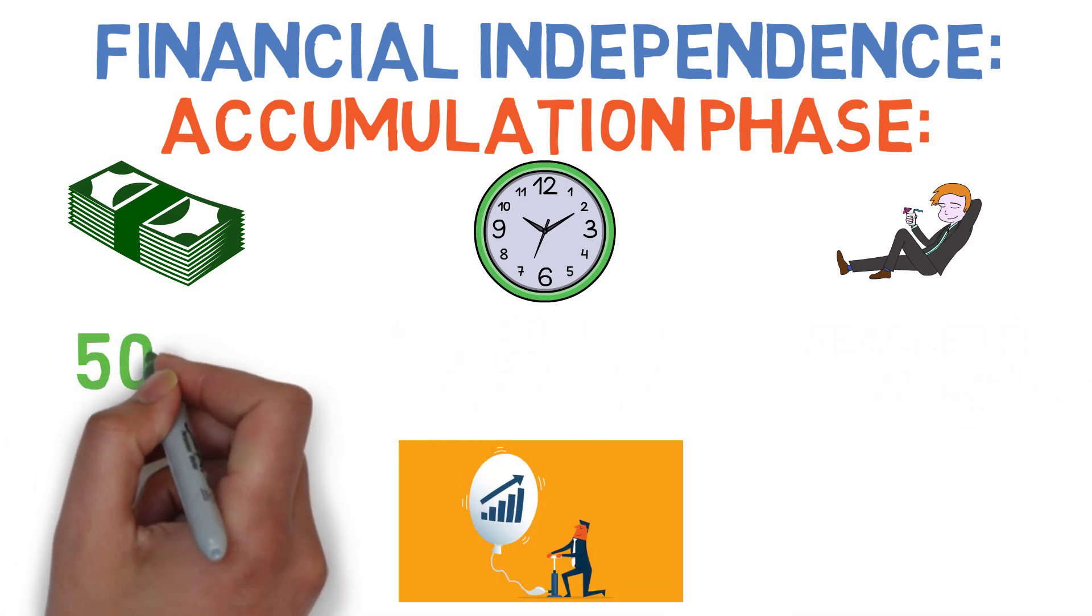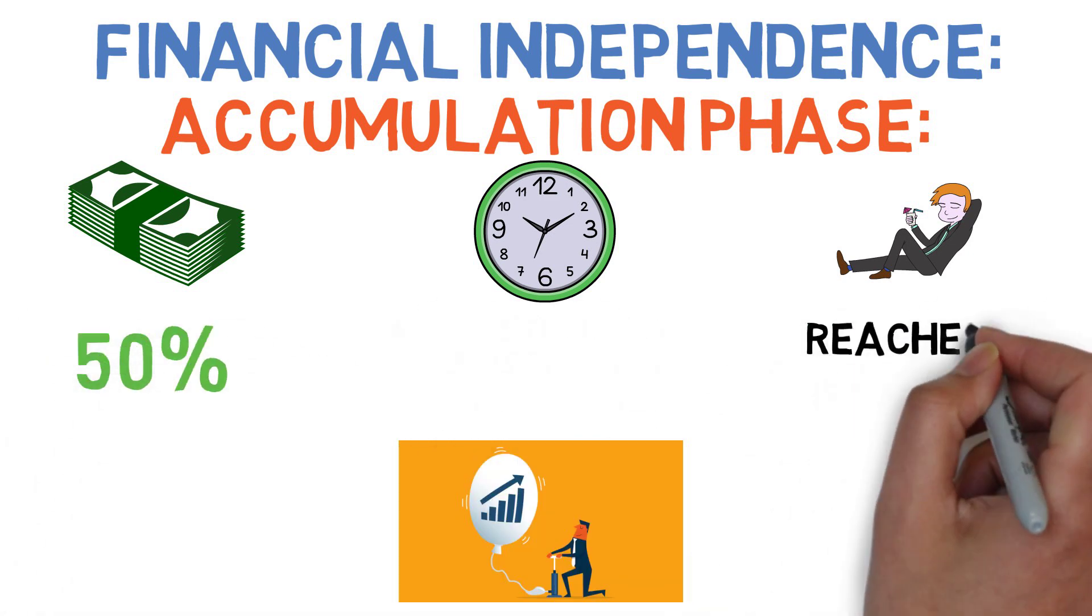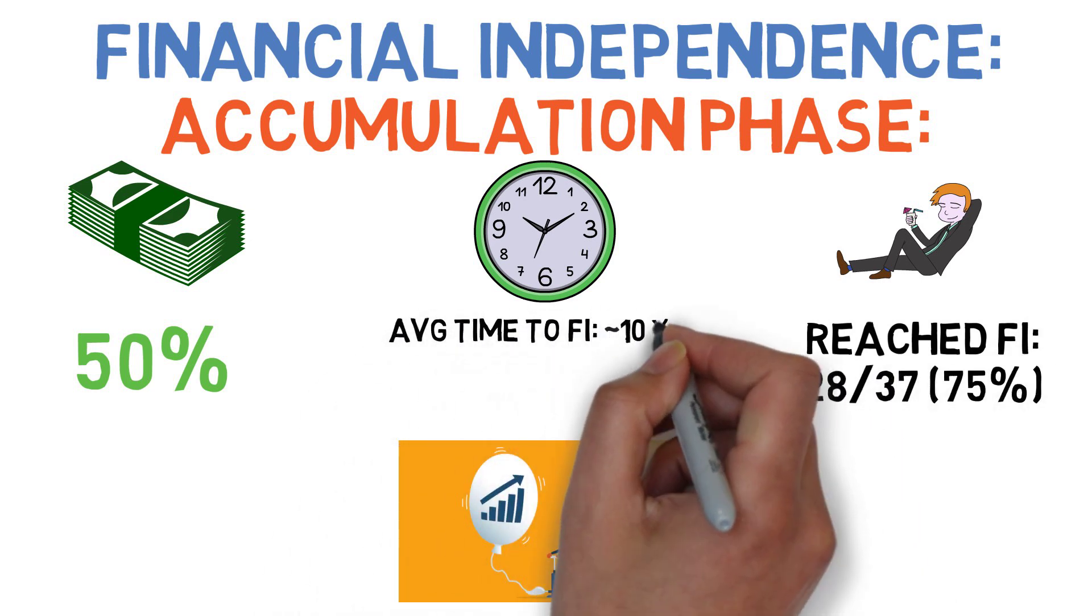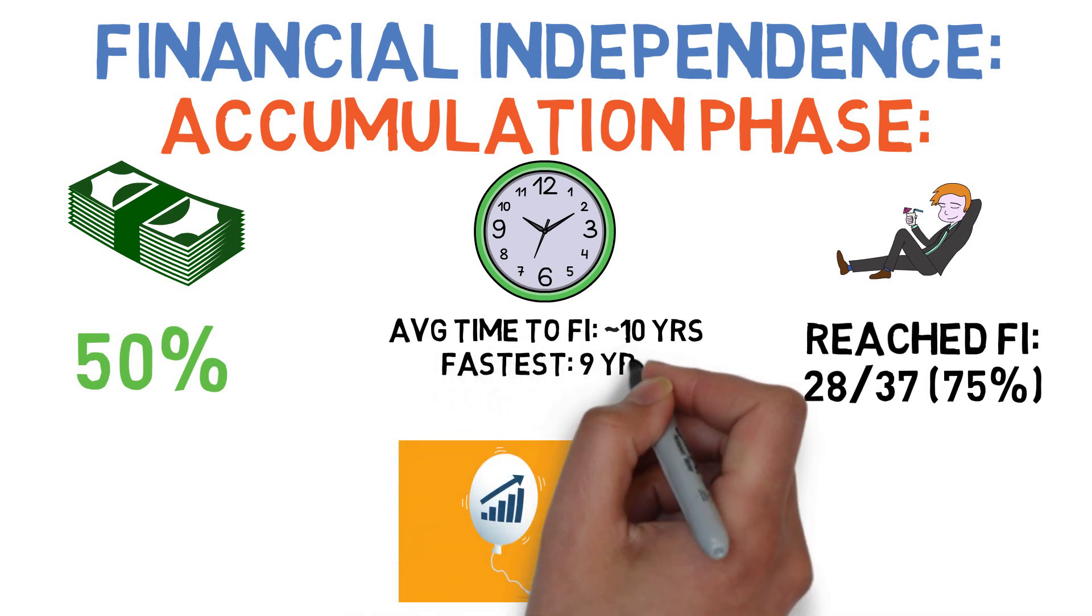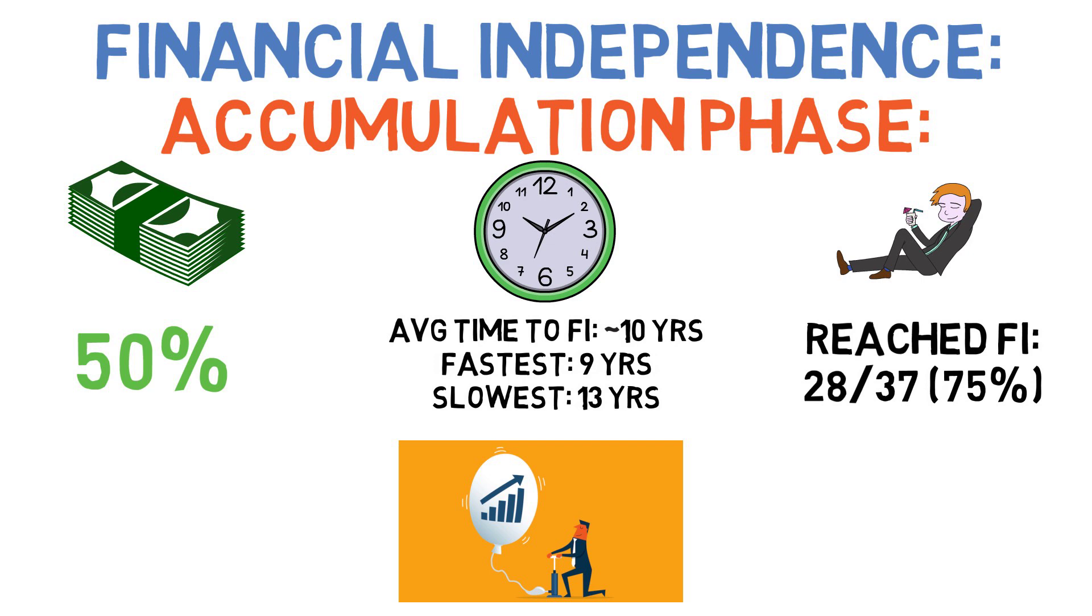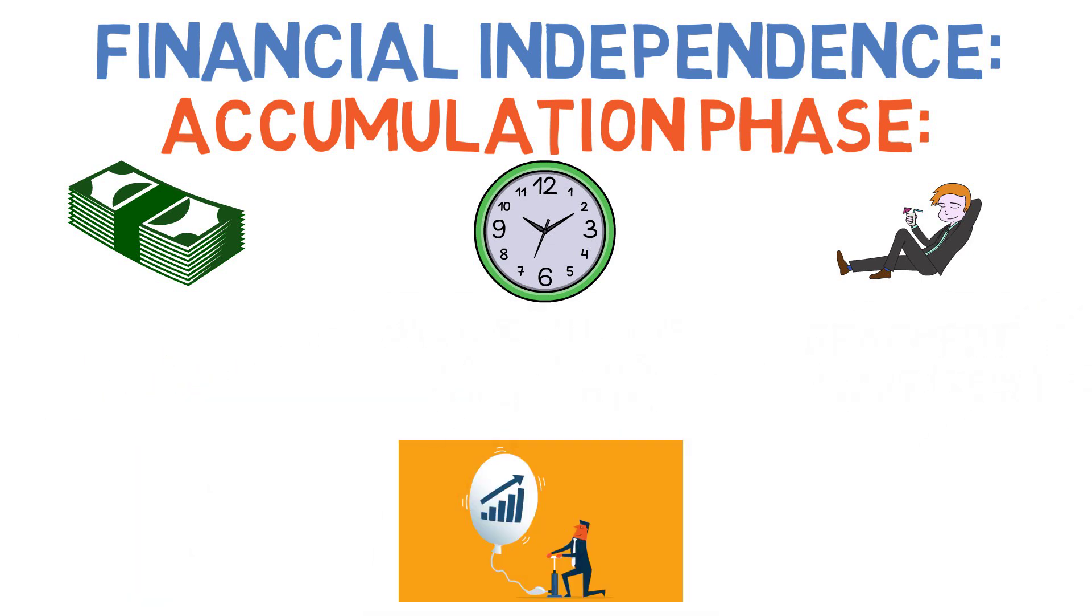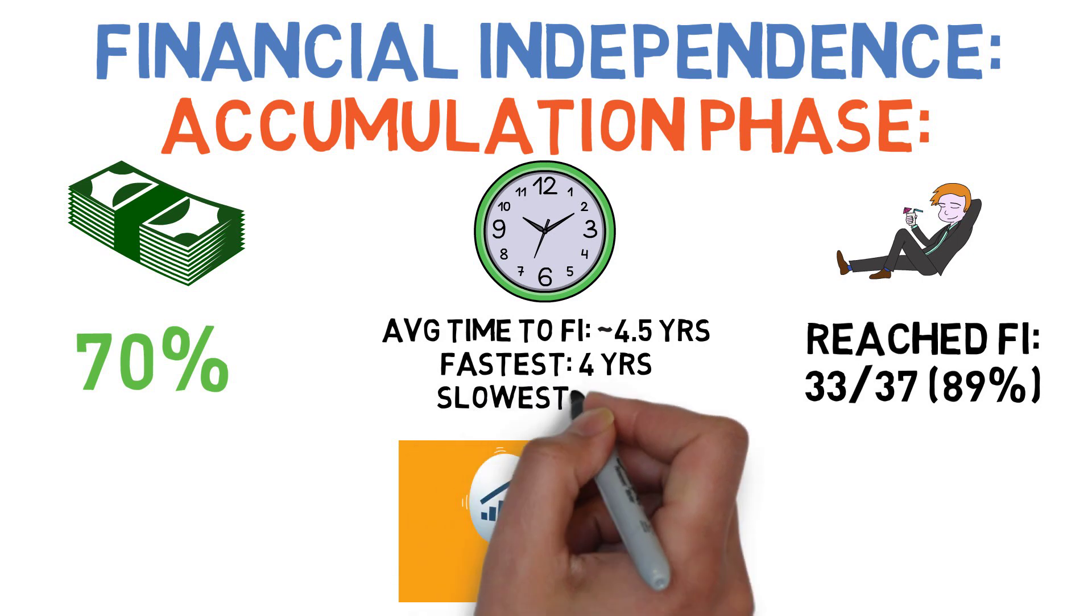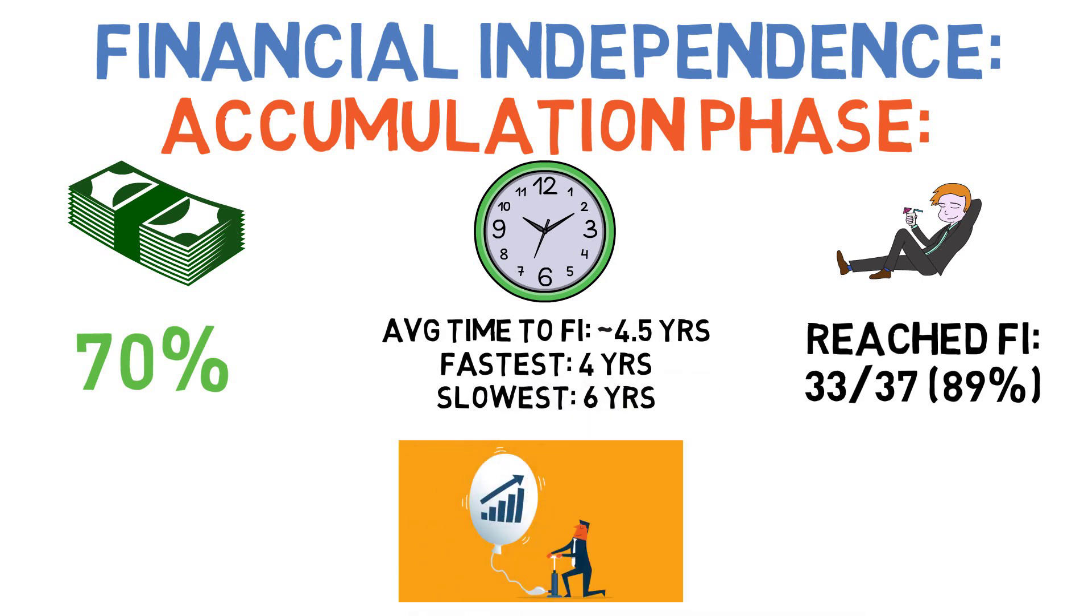And finally, with an absolutely crazy 70% savings rate, the numbers improved still further, with the hypothetical investor reaching financial independence in 33 of the 37 scenarios. On average, it took about four and a half years to reach FI, with the fastest and slowest paths taking about four and six years, respectively.